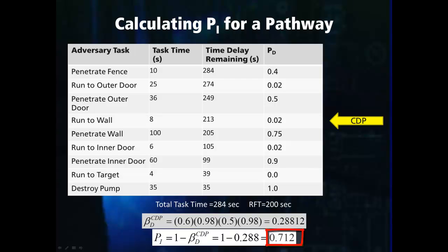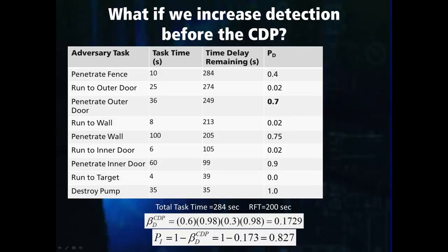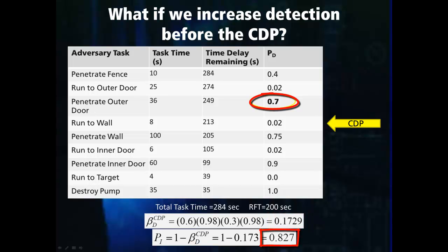On the next few slides, we will change some parameters of the protection system and show how this affects the value of the probability of interruption. In this table, we have the same pathway but have added a better detector to the outer door. This does not affect delay times and therefore has no effect on the critical detection point, but it changes the non-detection probability to 0.1729. Thus, this detector upgrade has improved the probability of interruption from 0.712 to 0.827.